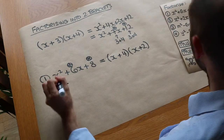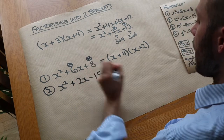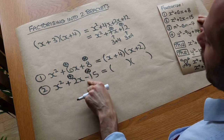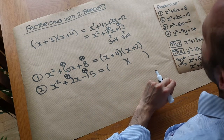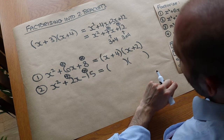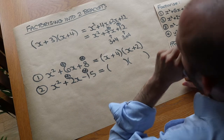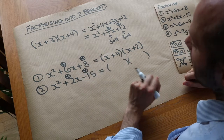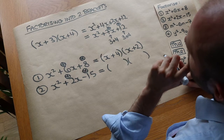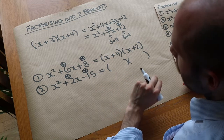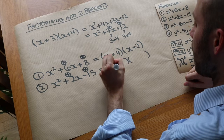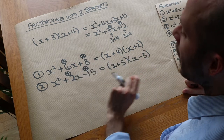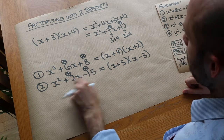Next: x squared plus 2x minus 15. We need two numbers which add to give positive 2 and multiply to give minus 15. Numbers that multiply to give 15 are 15 and 1, or 3 and 5. Since the product must be negative, one number must be positive and one negative. 5 and minus 3 multiply to give minus 15 and add to give plus 2. So the factorisation is (x + 5)(x − 3).